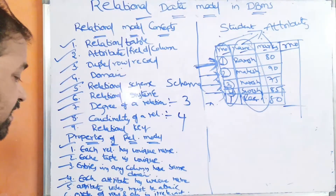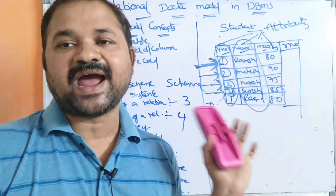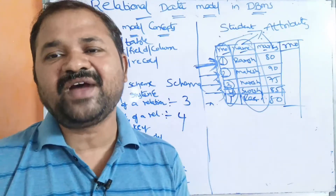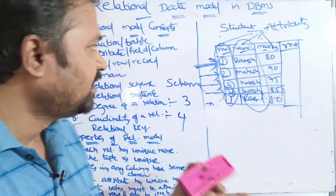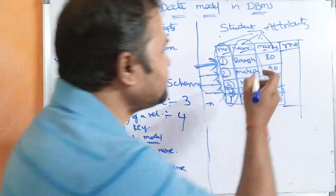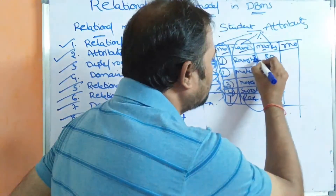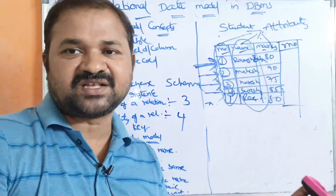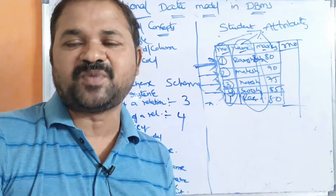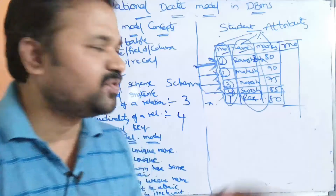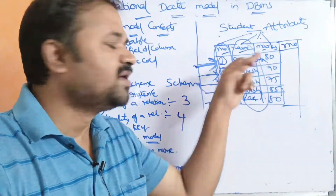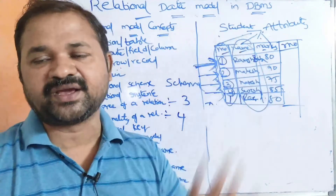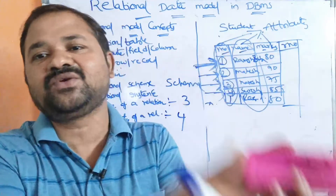The next property is: attribute values must be atomic. Atomic means we cannot divide that value further. For example, if the name is 'Ramesh Babu,' we cannot divide it into two parts — first name 'Ramesh' and second name 'Babu.' Further division of attribute values is not possible; attribute values must be atomic only.